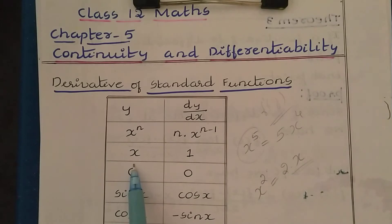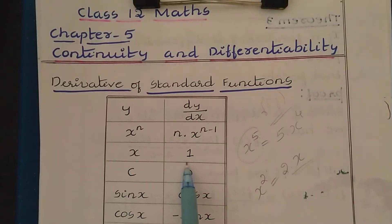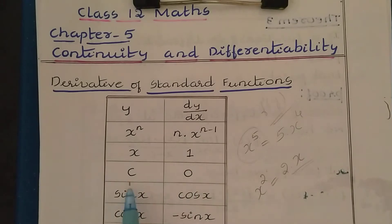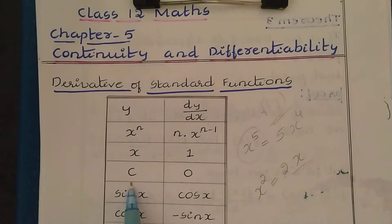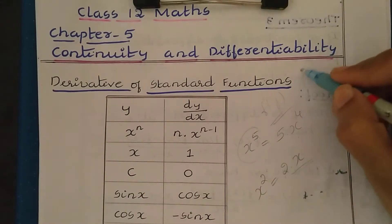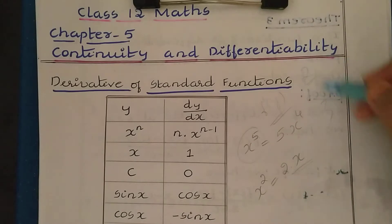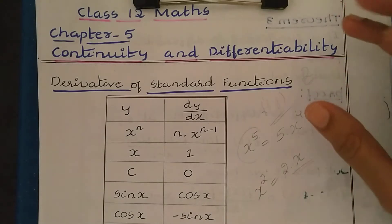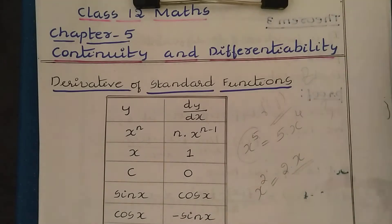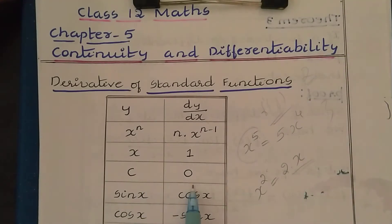Next, the derivative of a variable: if you have just x, then the derivative is 1. And if you have a constant — like 2 or 3 — these are constant values, so the derivative of a constant is 0.